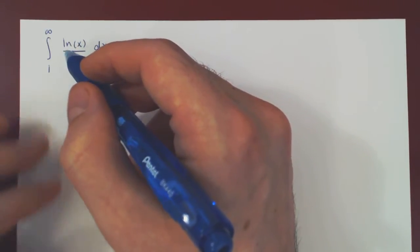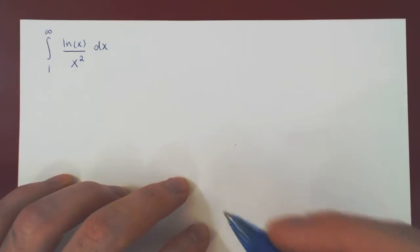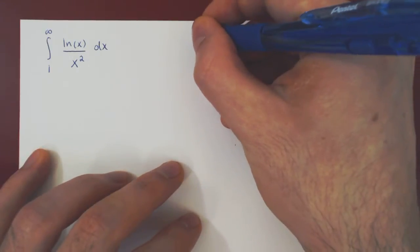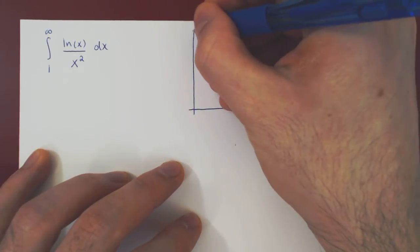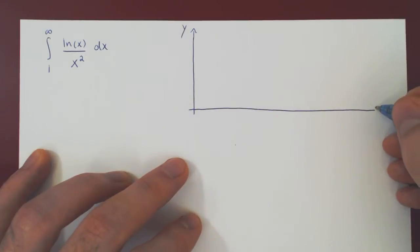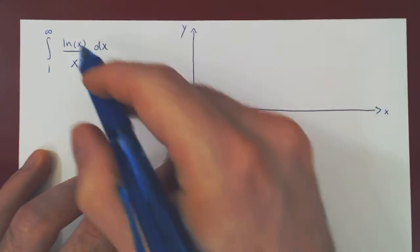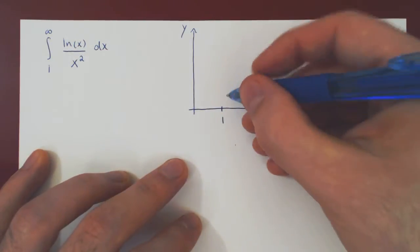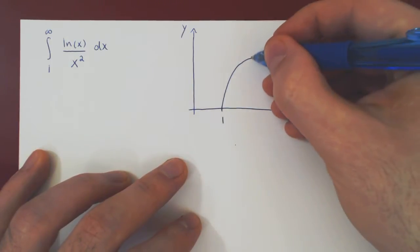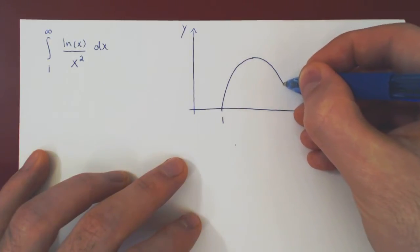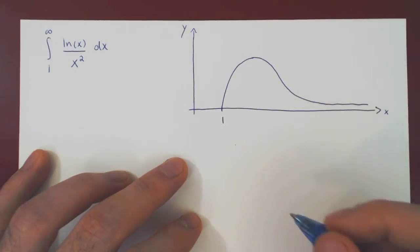So using your first and second derivative, you could easily sketch the graph of ln of x over x squared. I will leave this up to you, but here's what you should obtain. It's a rather interesting curve. At 1, ln of 1 is 0 over 1, so you'll get 0. The function initially increases, then you have an absolute maximum, then it starts decreasing, there's an inflection point, and then the graph in the limit will become smaller and smaller, and the curve shrinks to 0.